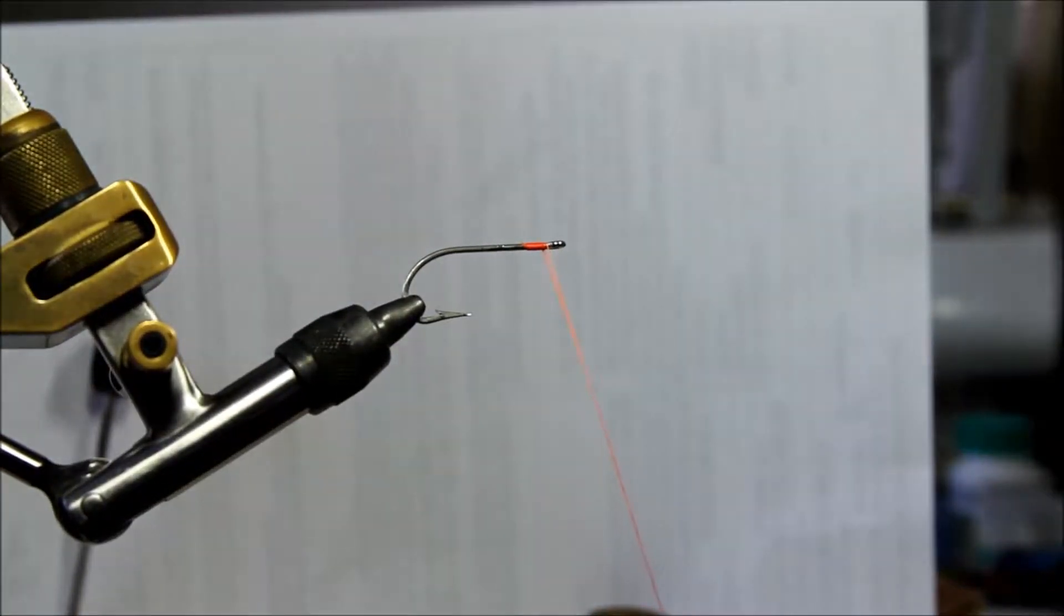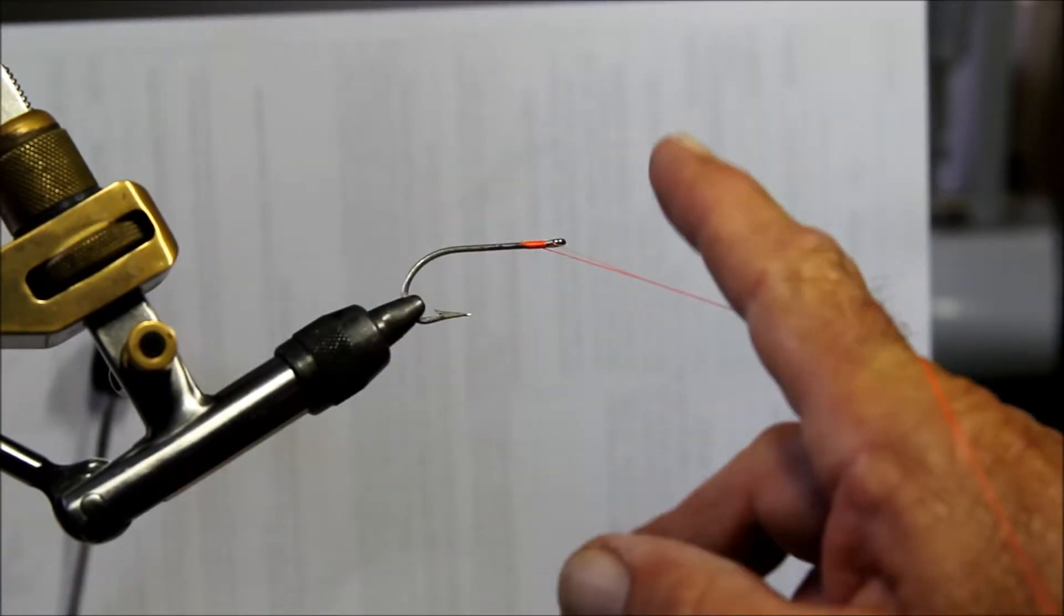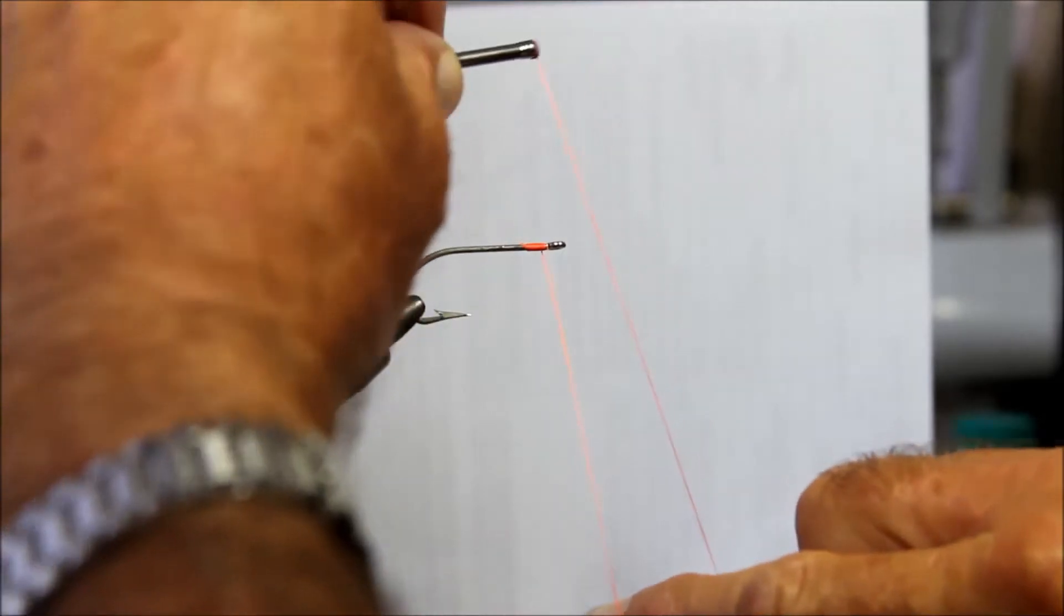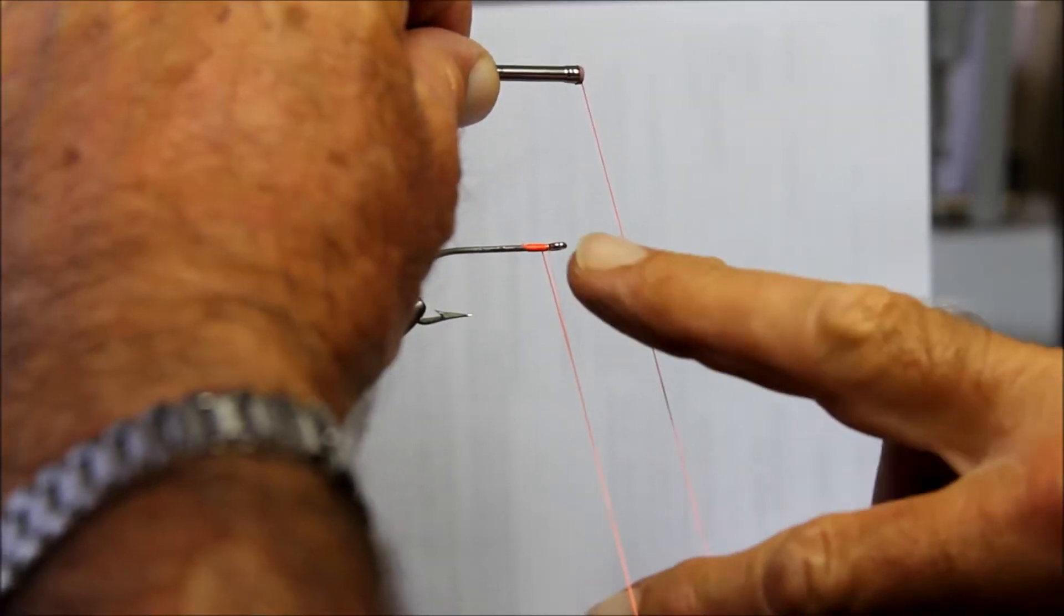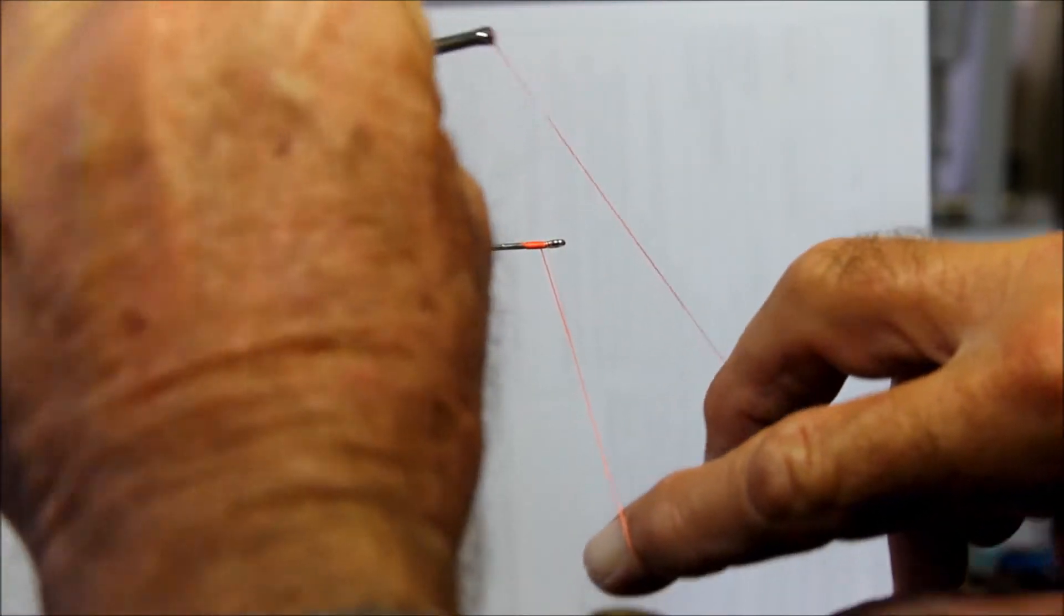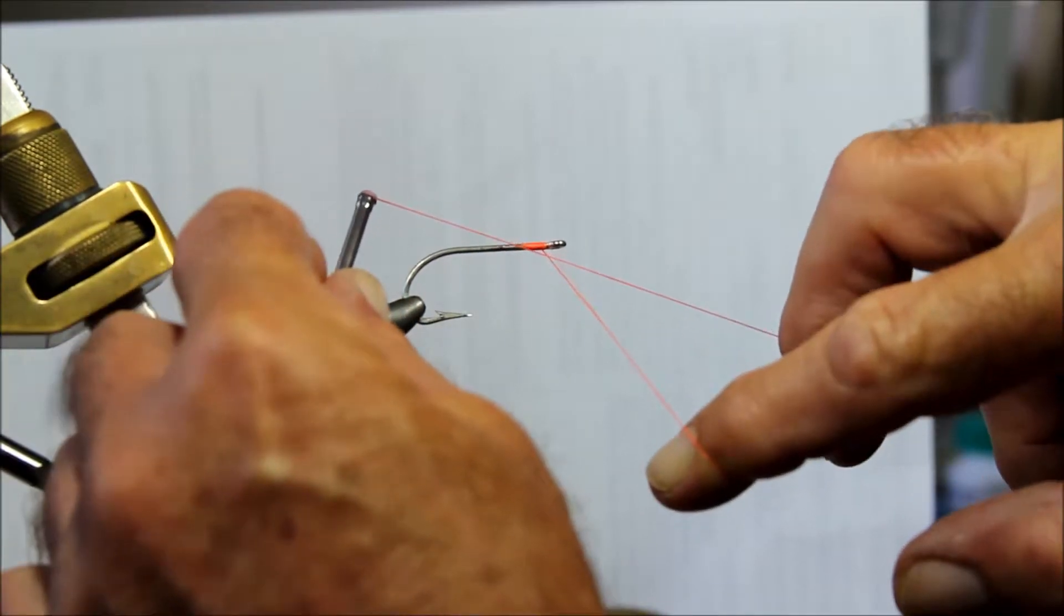Put your index finger around the line, bring the line up to form a U, put your middle finger in, bring that around to form a loop.